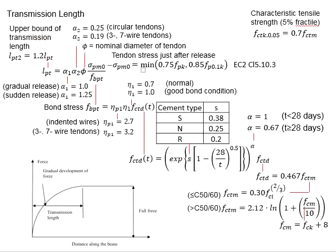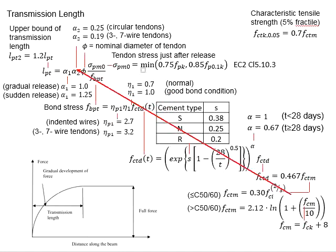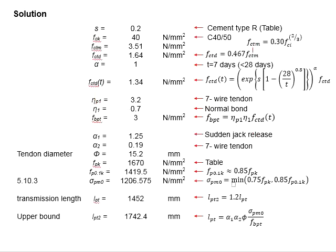To solve these questions, you will need to refer to this slide. Your ultimate goal is to determine the transmission length, which is LPT, and also the upper bound of the transmission length, which is LPT2. There will be a series of equations involved, which include the bond stress, the design tensile strength of the concrete at the time the pre-stressing force is released, the design tensile strength, and also FCTM. Substitute the relevant values into the equations all the way until you reach the transmission length.